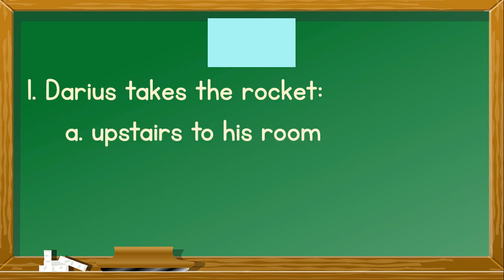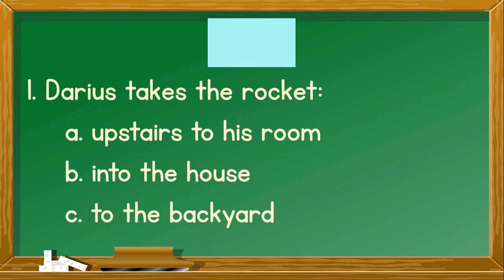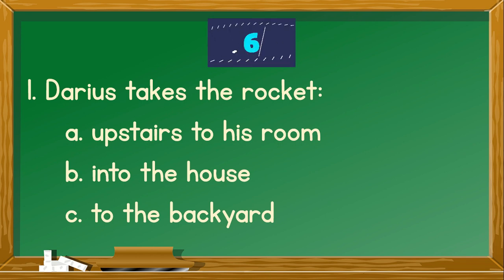This time, let's answer the questions from the story. Number 1. Darius takes the rocket. A. Upstairs to his room. B. Into the house. C. To the backyard. You're right. The correct answer is C, to the backyard.